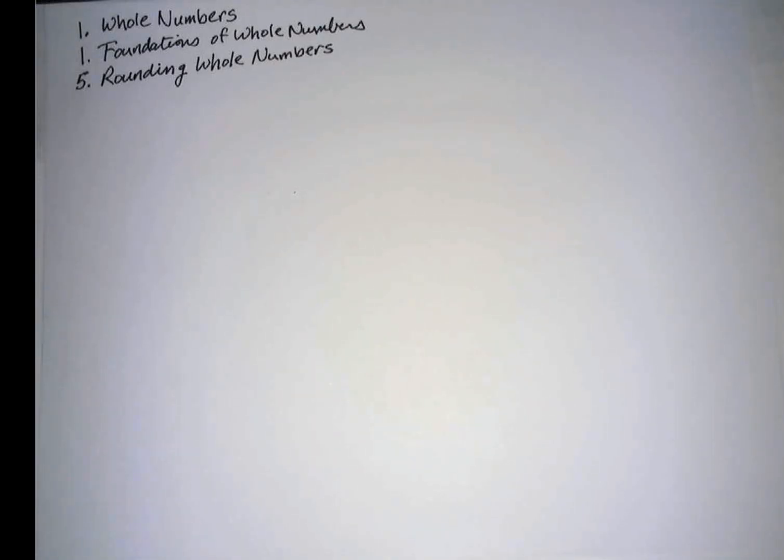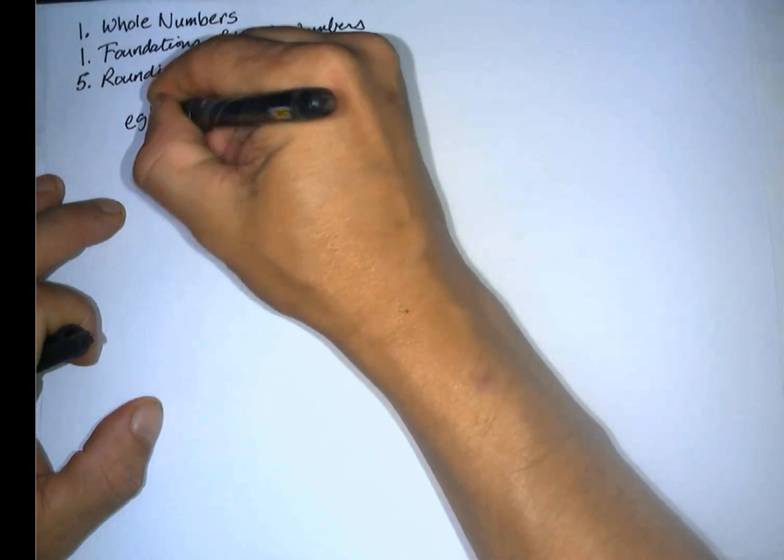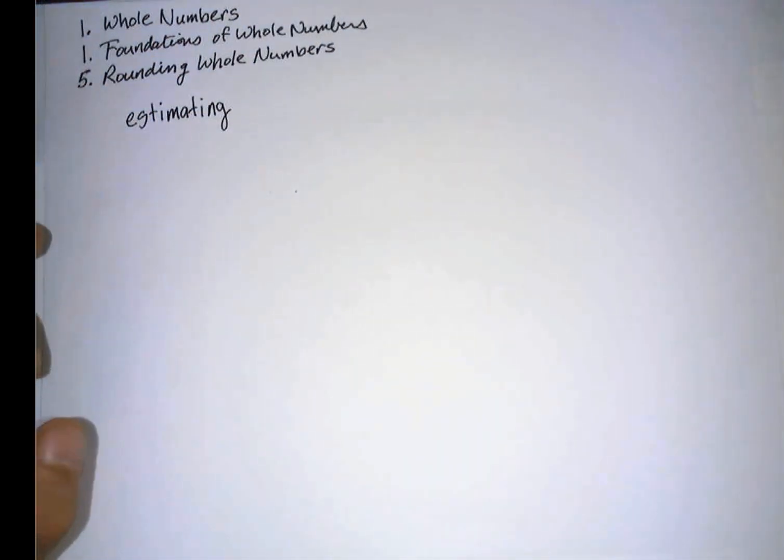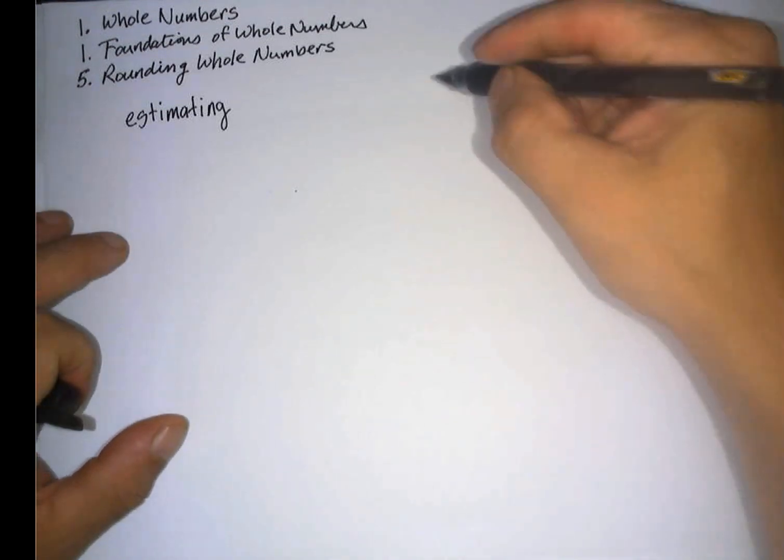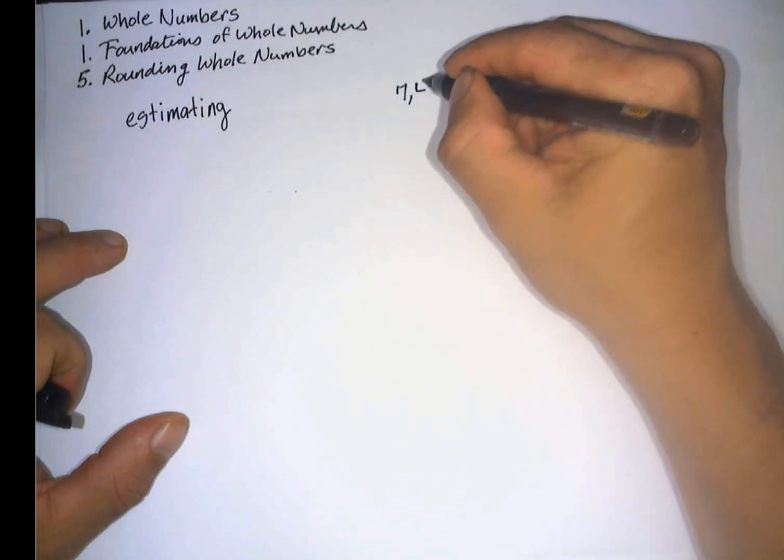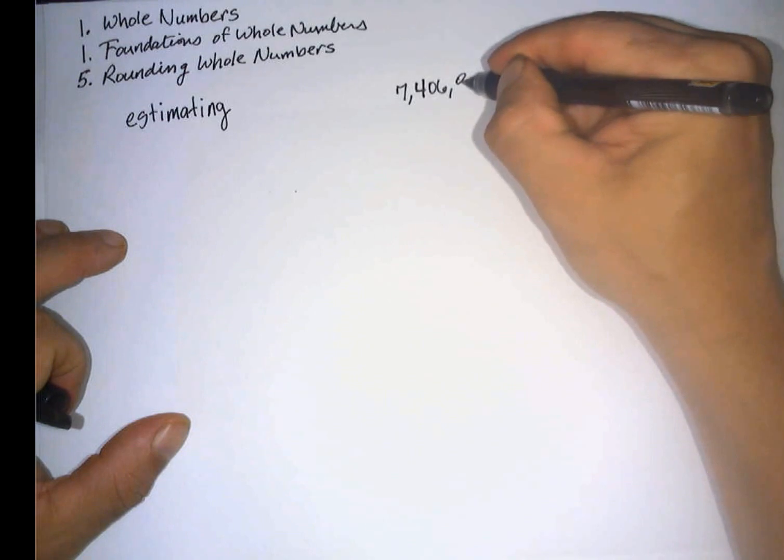This is the fifth lecture in our first section, Foundations of Whole Numbers. Today we're going to round whole numbers. Another word for rounding is estimating. This is something that you do a lot and you probably don't even think about it. The example I'm going to use first is the population of the Earth that we used on the first. I'm going to use the same number, but I know it's changed since then, since it was a few days ago.